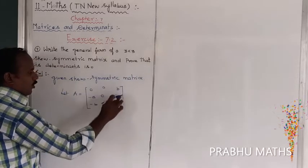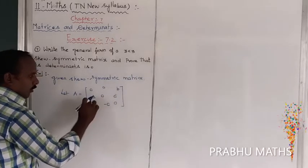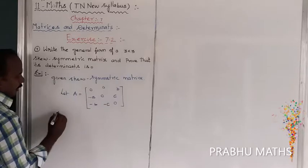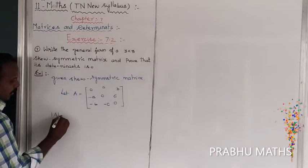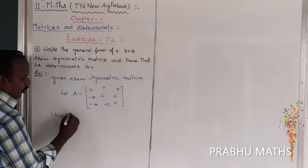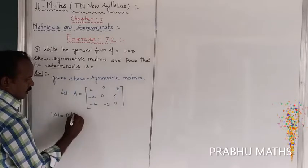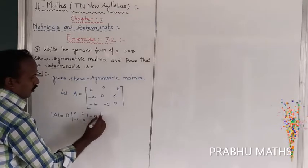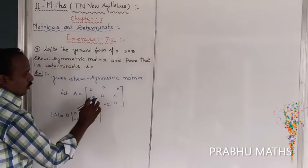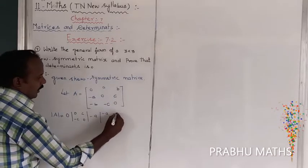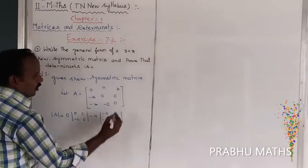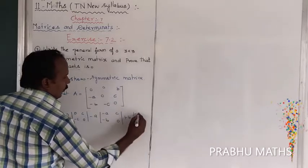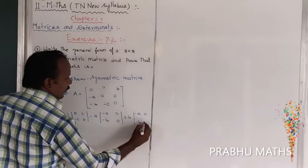So to find the determinant of A: the diagonal is zero, the upper diagonal values are plus, and the lower diagonal values are minus. The determinant of A equals zero times its minor, minus A times the next minor involving zero and minus B, minus C, plus B times the minor involving minus A, zero.